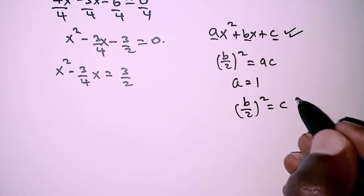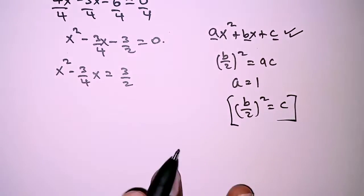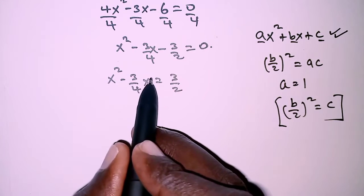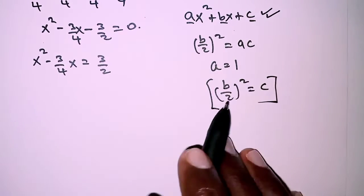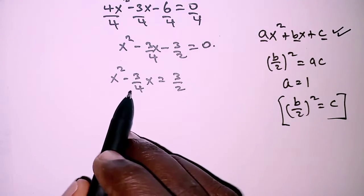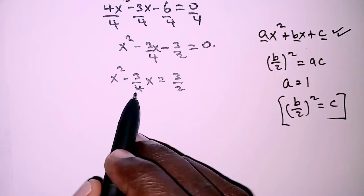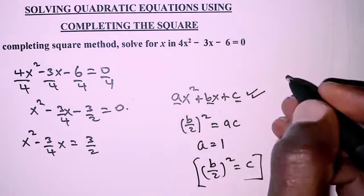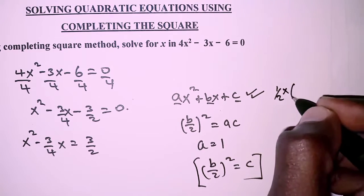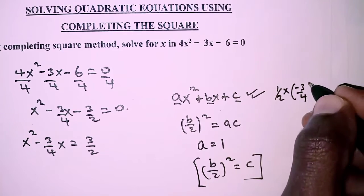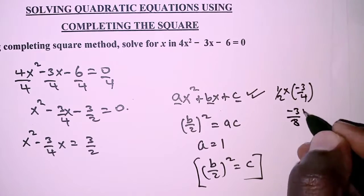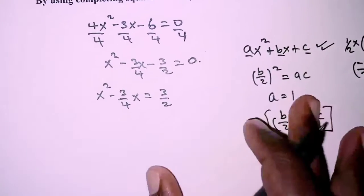Applying this to our problem, to get the constant term c, we use b over 2 squared. In our case, b is negative 3 over 4. So we take one half times negative 3 over 4, which gives us negative 3 over 8.